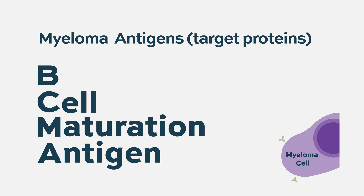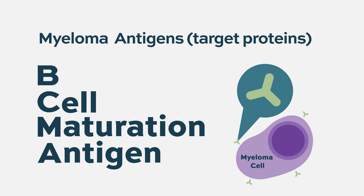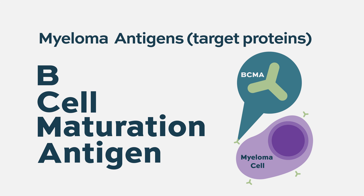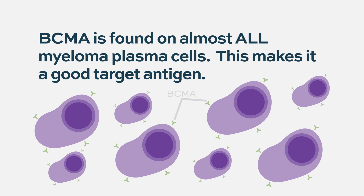In other words, BCMA is a molecule on the surface of the malignant plasma cell that is present in almost 100% of cases, and that makes it a very attractive target to try to kill this malignant plasma cell. And this is where we are fortunate today to have different agents that can target BCMA.